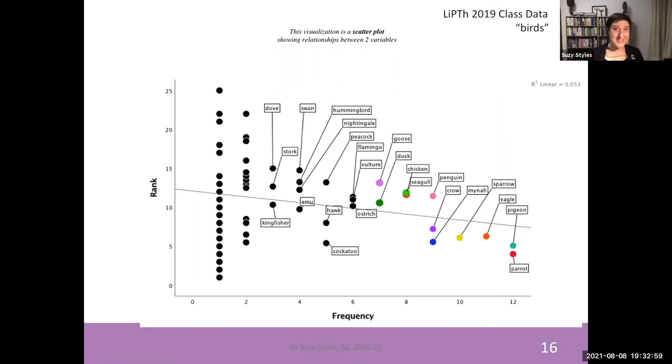In this visualization we're looking at the data in a different way. We're looking at the frequency with which an individual bird was listed on the x-axis and on the y-axis what we're looking at this time is what position did a bird have in an individual's list. Now this is the average rank for items that were listed by more than one person. So what we can see here is that those highly frequent birds, the parrot and the pigeon and the eagle and the sparrow, were birds that came very early in the list of people who listed them. So they were some of the top two or top five words that a person came up with.